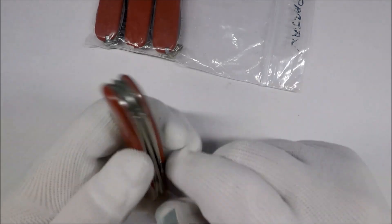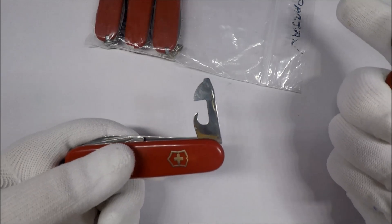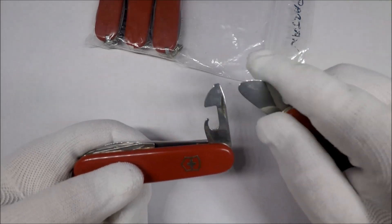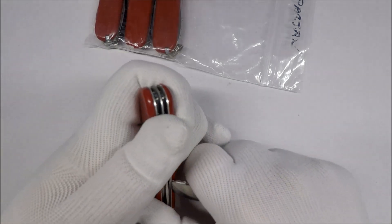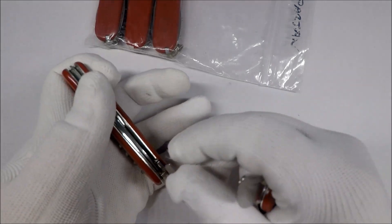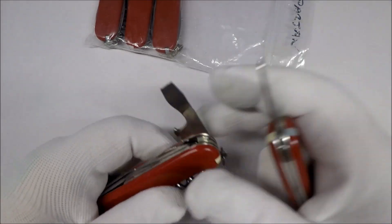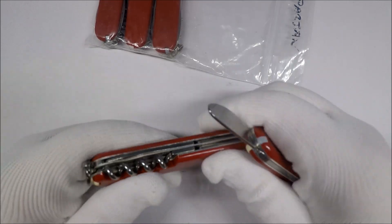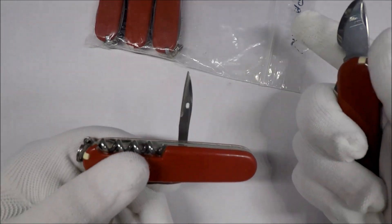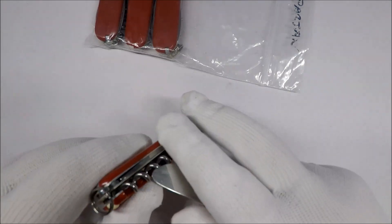You have the usual Swiss Army knife can opener with the small regular screwdriver. You have the bottle opener, larger regular screwdriver and wire stripper. And on the back you have the awl or reamer and a corkscrew.